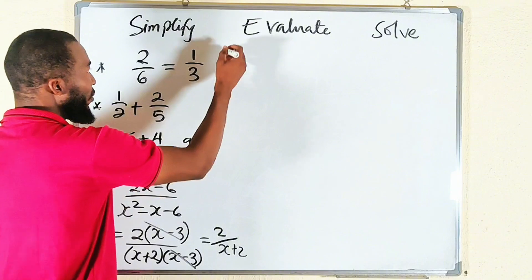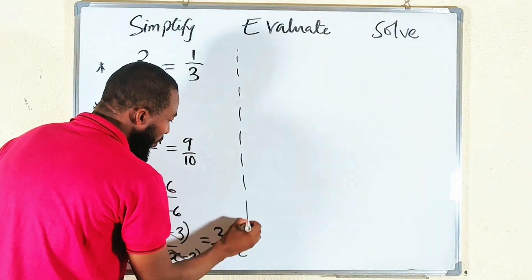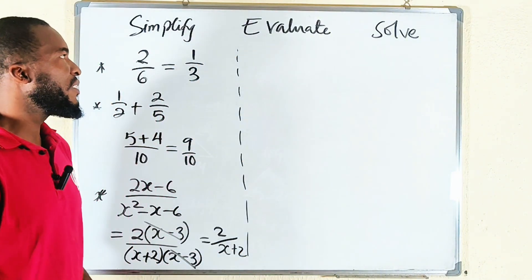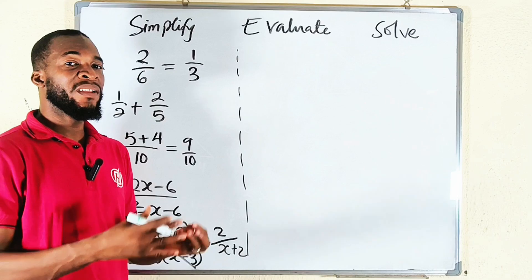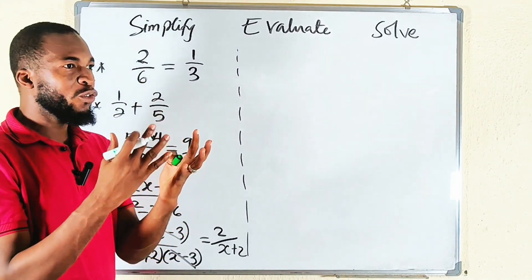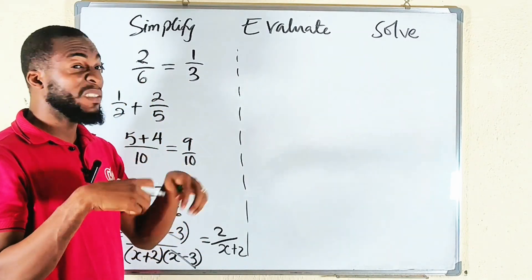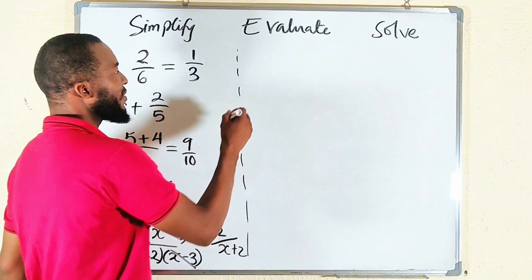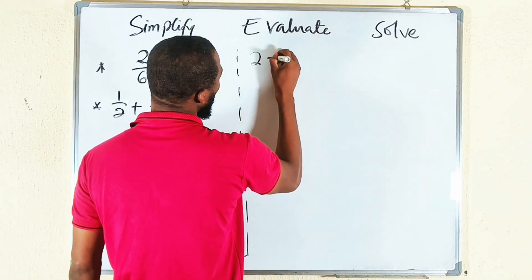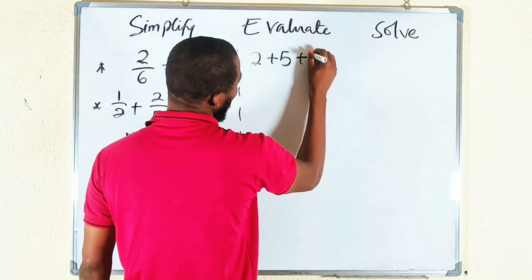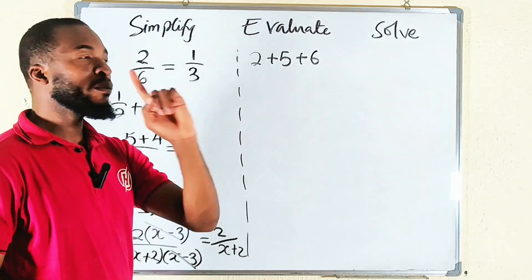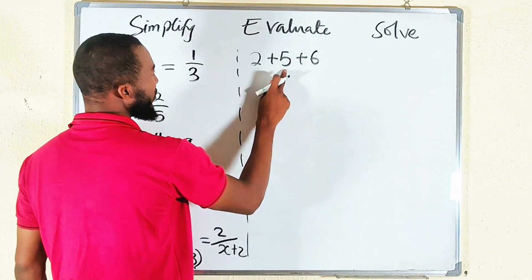What about evaluate? Once your teacher says evaluate, he's expecting a value from you—to come up with the value after simplifying whatever it is. For example, if I have 2 plus 5 plus 6, evaluate means you should come up with a single value here.